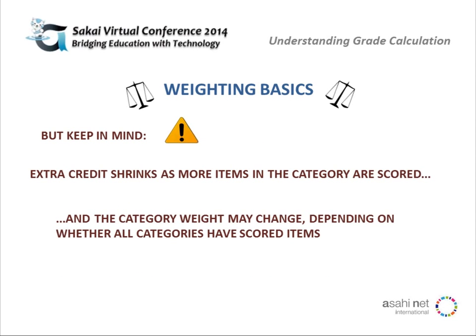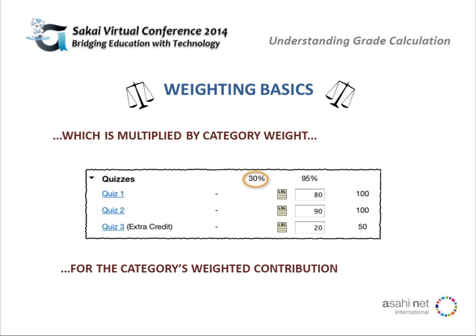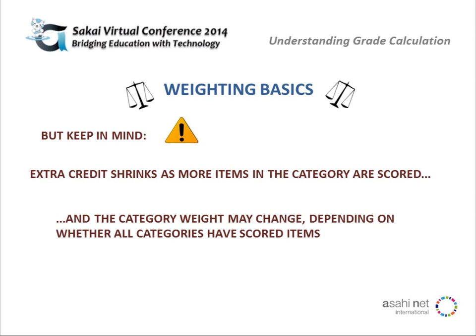A couple things to keep in mind: that same extra-credit-shrinking scenario will come into play as more items in the category are scored. For example, if you put 20 points of extra credit and there are two scored items, that's 20 divided by 2 equals 10 points. If you score two more items in this category, it's 20 divided by 4, so only 5 points. Also, the category weight itself may change if other categories don't yet have scored items.